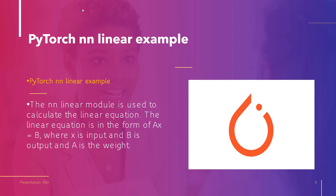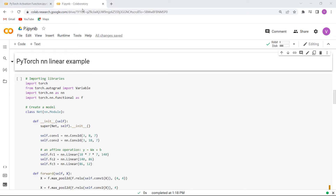Now move forward and discuss the PyTorch nn.Linear Example. The nn.Linear module is used to calculate the linear equation in the form of Ax = b, where x is input, b is output and a is the weight. The nn.Linear module is also defined as the single layer feed forward network. Let us understand the concept with the help of an example.